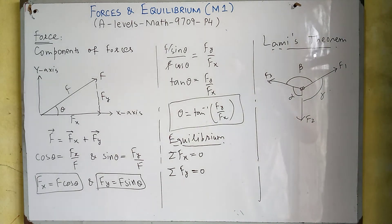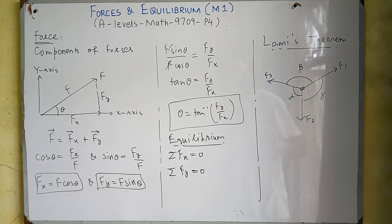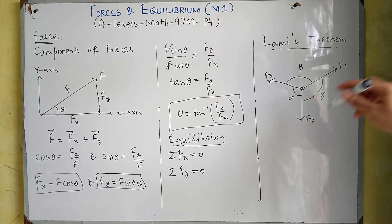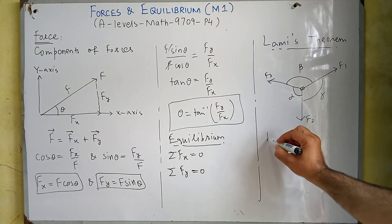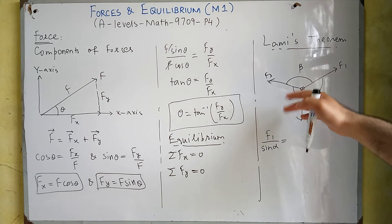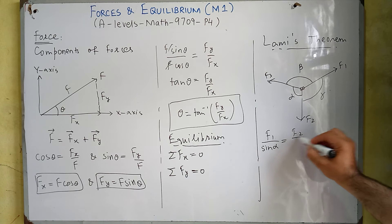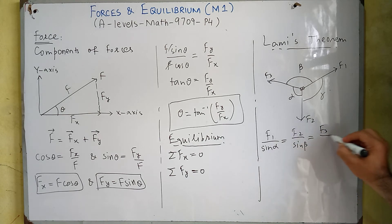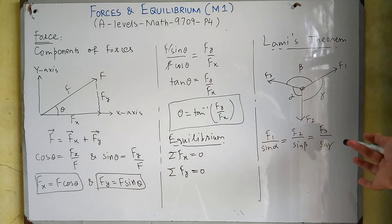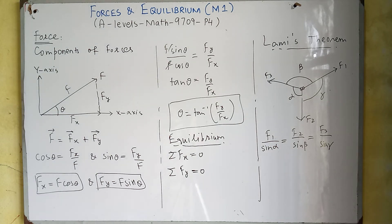This theorem states that if these three forces are in equilibrium — meaning the sum of these three forces equals zero — then we can derive a mathematical relation between the three forces and the three angles. That relation is: F1 over sine alpha equals F2 over sine beta equals F3 over sine gamma. This is another form of the sine law similar to the sine law we have in trigonometry.